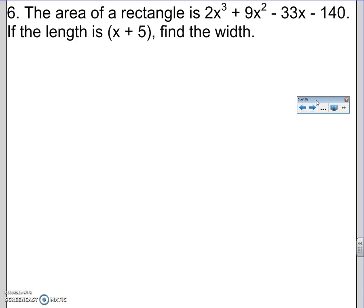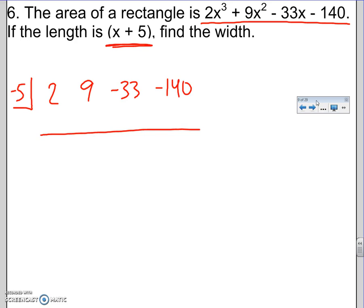Synthetic division is if you have a factor right here, you get the root. You put it in a box. If the factor is x + 5, the root, the answer is negative 5. Then you do the coefficients of the dividend. So there's degree 3, there's four terms. The four numbers in descending order are 2 for x³, 9 for x², negative 33 for x, negative 140 for the constant.